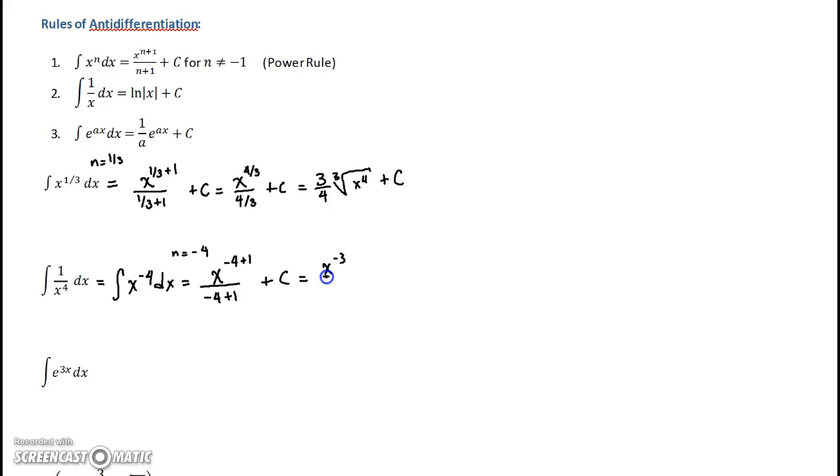This you could write as x to the negative 3 over negative 3 plus C, and then you can send this guy to the denominator and put it as 1. Let's put the negative outside: negative 1 over 3x cubed plus C. And there you have it, there's your antiderivative.